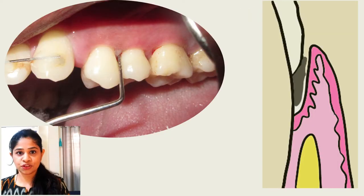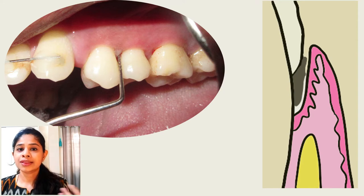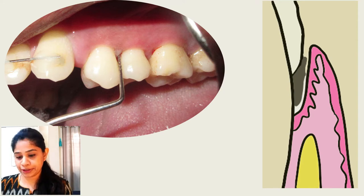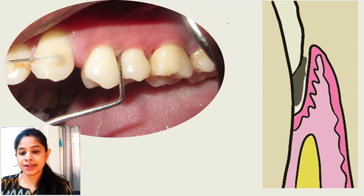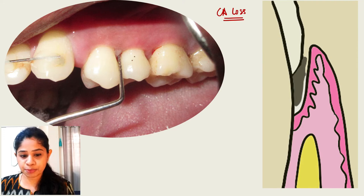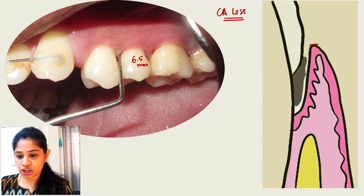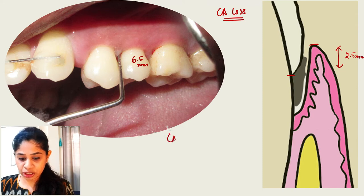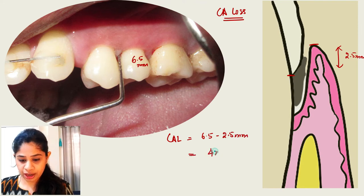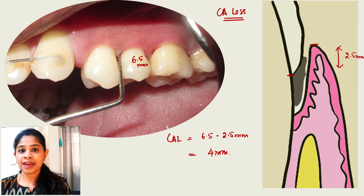What happens in the case of periodontitis? When there is inflammation, there is underlying destruction of the attachment apparatus. The junctional epithelium has migrated apically, and this leads to clinical attachment loss. As we discussed, the probing pocket depth is 6.5 mm, and let's say the distance between the gingival margin to the CEJ is 2.5 mm. Then the clinical attachment loss is 6.5 minus 2.5 mm, which equals 4 mm. So in case of periodontitis, we talk about the term clinical attachment loss.